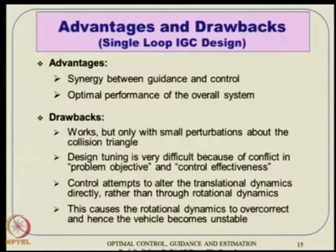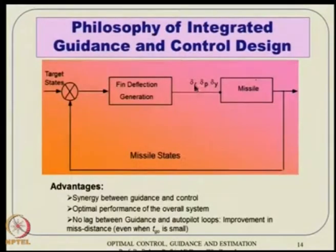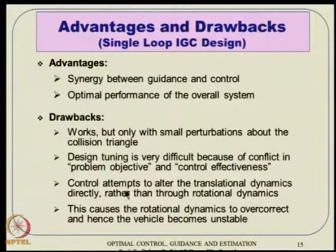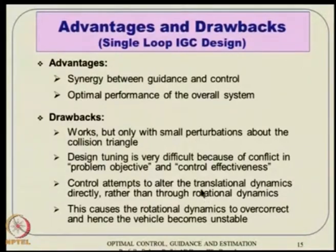Any amount of control surface deflection must account for body rates explicitly. If it does not, then delta_p, delta_q, delta_r also appear in the velocity-level equations (U_dot, V_dot, W_dot or V_dot, alpha_dot, beta_dot). If the objective is to translate the vehicle from point A to point B, then implicitly in the design process, the fin deflections get generated through velocity-level equations, which are not good. We must go through the moment-level equation, otherwise tuning becomes very difficult. Control attempts to alter translational dynamics directly rather than through rotational dynamics, causing the rotational dynamics to over-correct and the vehicle to become unstable.